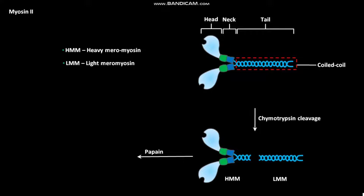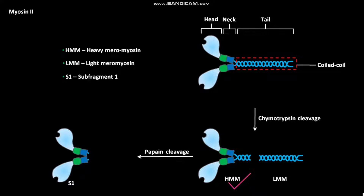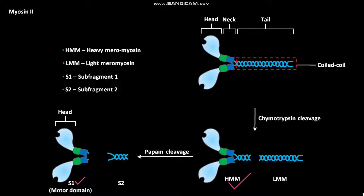In the presence of papain, HMM undergoes limited proteolytic cleavage to produce S1 (subfragment 1, motor domain) and S2 (subfragment 2). The S1 fragment of myosin-2 consists of the head domain and neck domain. The S2 and LMM regions make up the tail domain of myosin-2.